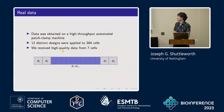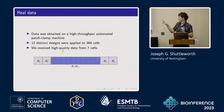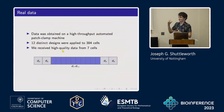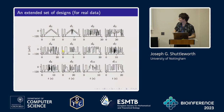Moving on to the real data — we use a high-throughput automated patch clamp machine which does a load of these experiments all at once on 384 different cells. We boosted the number of experimental designs to 12, and these 12 designs get applied sequentially to each well. We actually repeat the first experiment four times to make sure we're getting the same output each time, since there can be stability issues with a real biological cell changing over the course of the experiment. Because of this, we only end up using data from a smaller proportion of the cells.